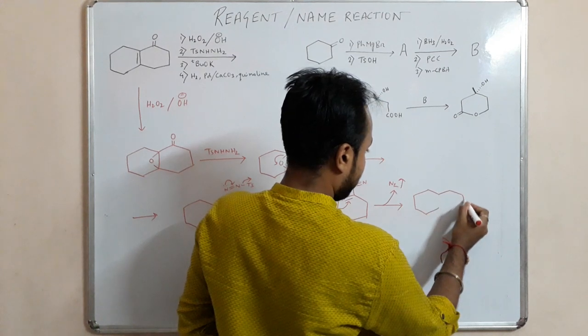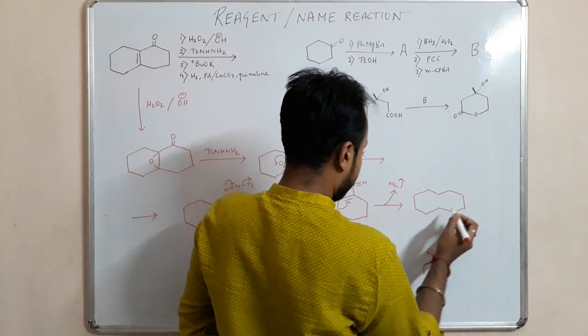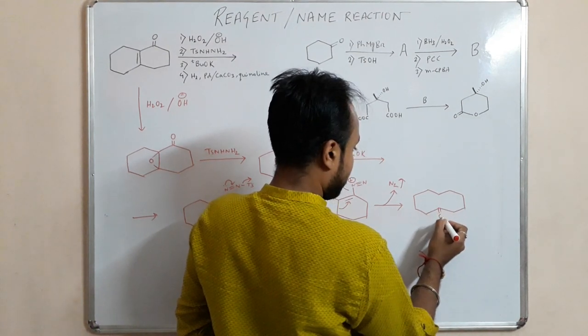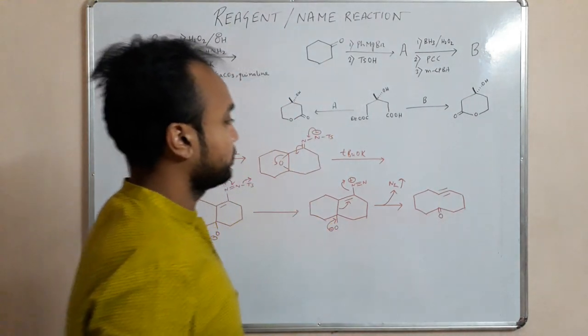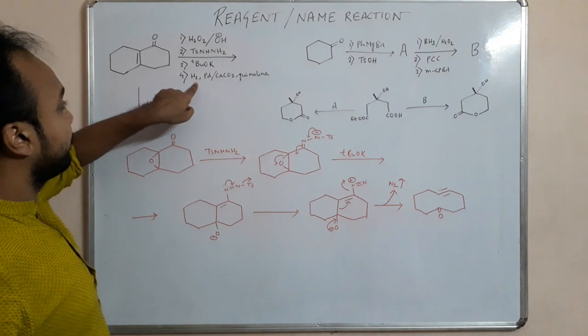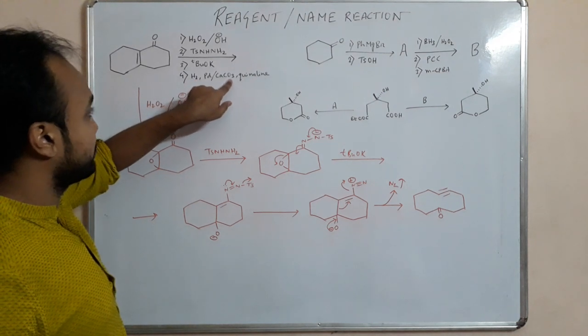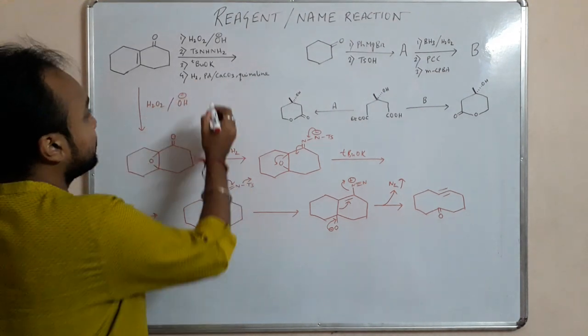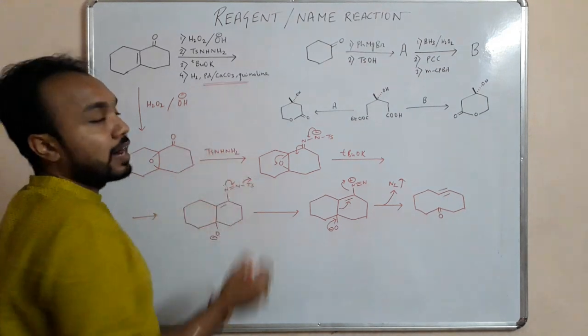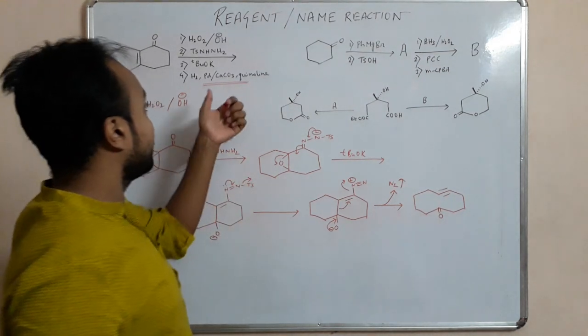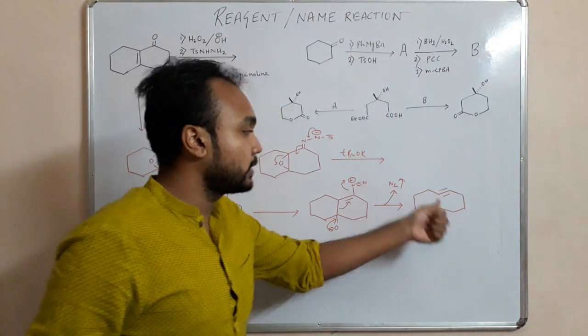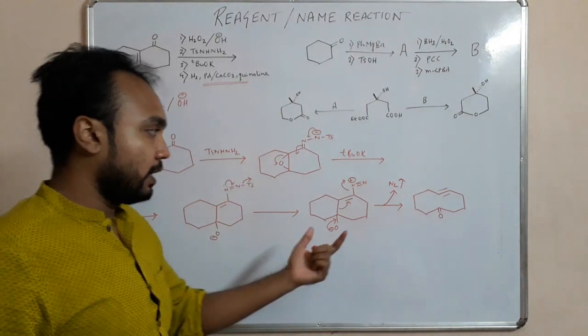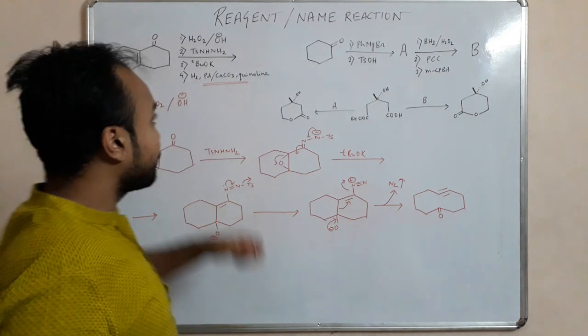So what is going to happen? Now we are getting this product. Now we have given hydrogen palladium charcoal quinone, this is basically the Lindlar catalyst. So what Lindlar catalyst does, it reduces the triple bond to a double bond with a cis configuration.